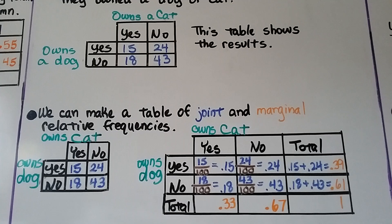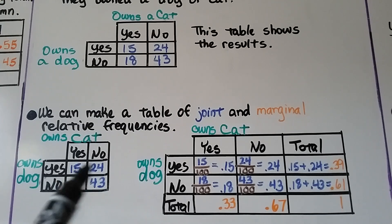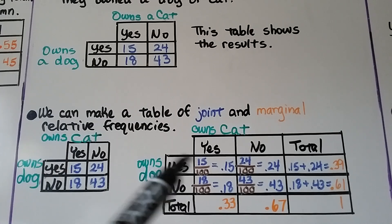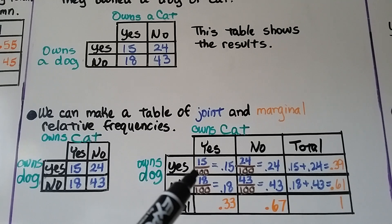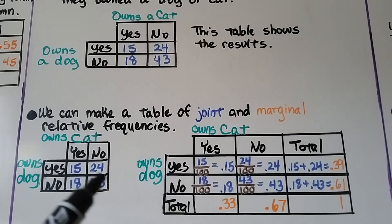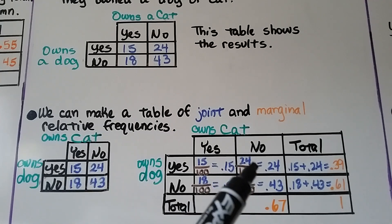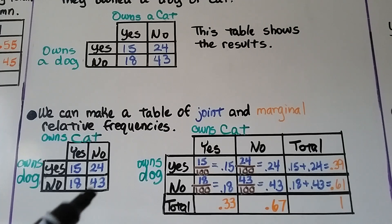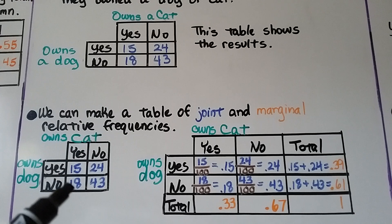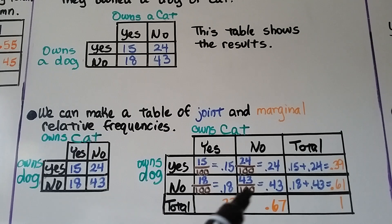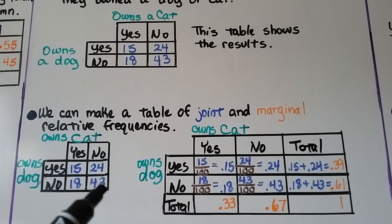We can make a table of joint and marginal relative frequencies. So here we have our information of owning a cat and owning a dog, and we know there's a total of 100 here. So for this owns a dog, yes, and owns a cat, yes, we have 15 over that total 100. That gives us 0.15. For owns a dog but doesn't own a cat, this no, we have 24, that's 24 over 100, or 0.24. For the dog, no, but cat, yes, we have 18, so that's 18 over 100, or 0.18. Then we have 43 hundredths, for they don't own a dog or a cat.